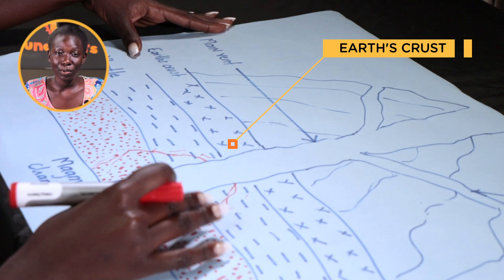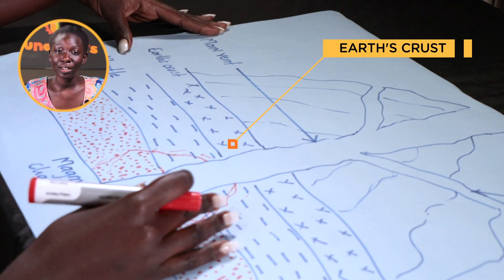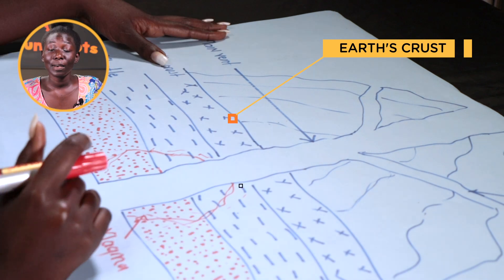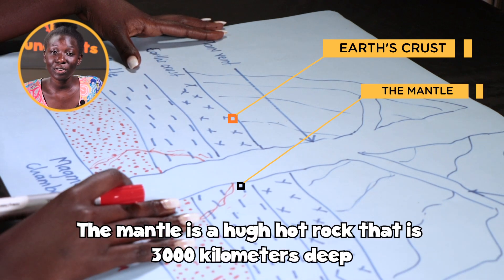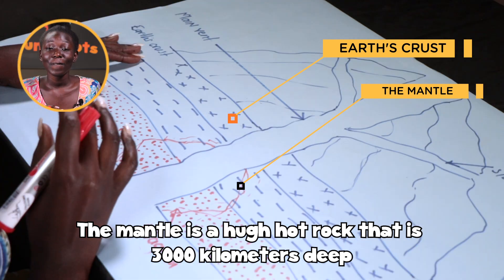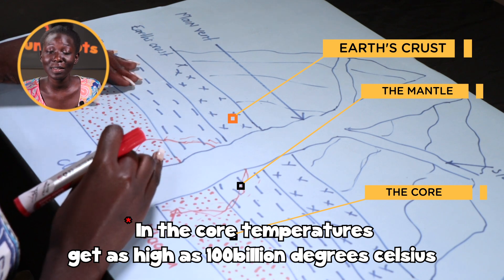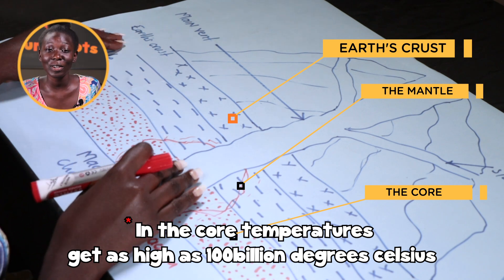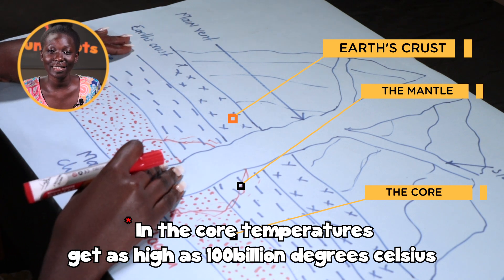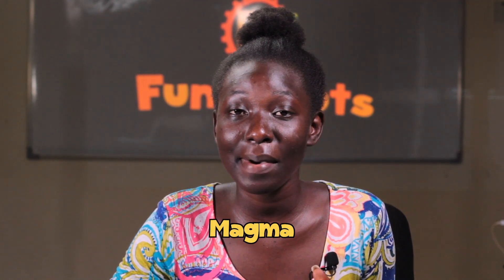If you were to dig a hole into the earth's crust you would realize that temperatures increase as you go deeper. At some point you get to a huge hot rock that runs for about 3,000 kilometers — that is called the mantle. If you go deeper into the mantle, temperatures get extremely high, which is way hotter than the sun. It is because of the extreme temperature in this part of the earth that the rocks here are melted into liquid form, which we refer to as magma.